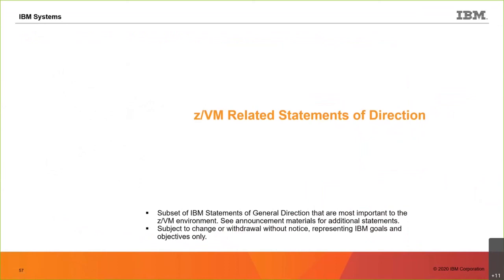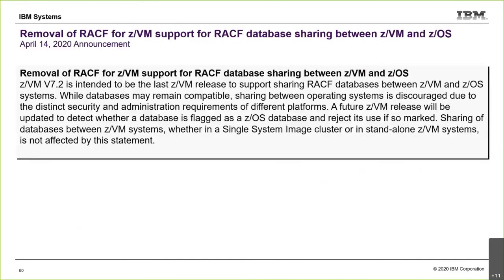On statements of direction from the preview announcement, with additional ones coming in the GA announcement: one important one — 7.2 will be the last release supporting sharing your RACF database between a ZVM system and a ZOS system. A future release will not allow that. If you're doing that, let us know; we want to talk to you. Note this doesn't affect sharing the RACF database across multiple ZVM systems — it's only the aspect of sharing it with a ZOS system.